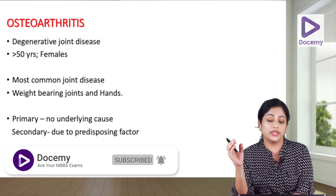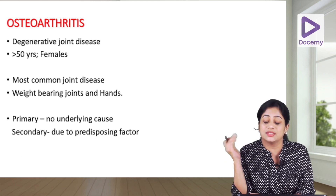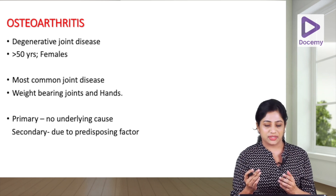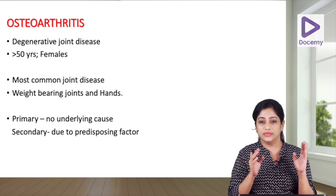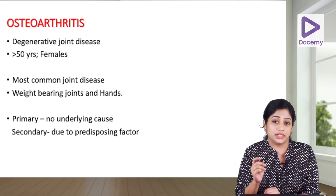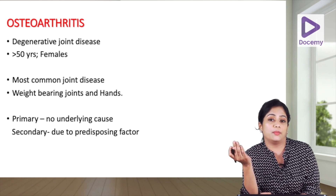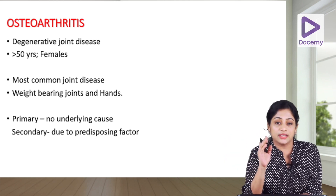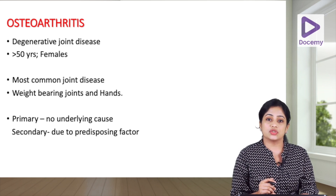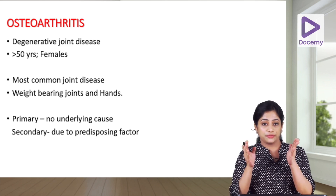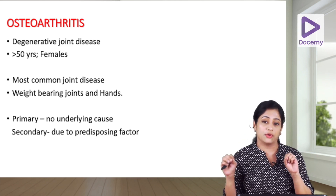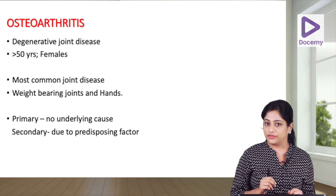OA stands for old age disease because the incidence increases with age. In old age, the joints are worn out — this is a wear and tear disease. Osteoarthritis is a degenerative joint disease, more common after 50 years of age, and at this age it is more common in females. It is the most common joint disease, and the weight bearing joints and the joints of the hands are most commonly affected.